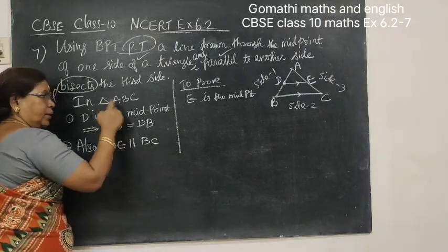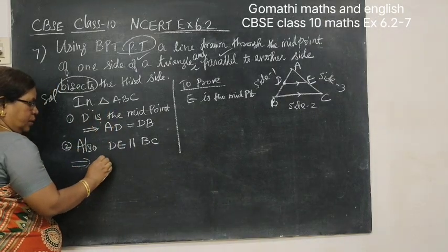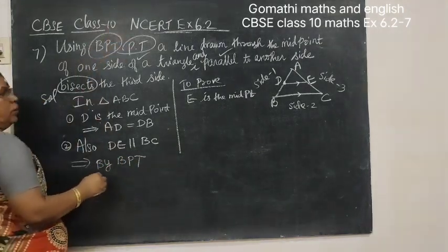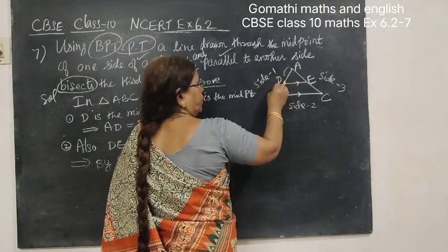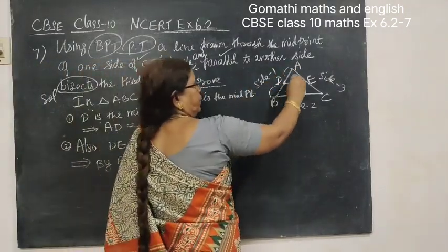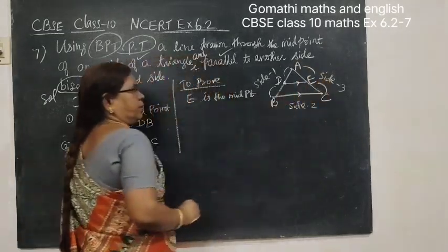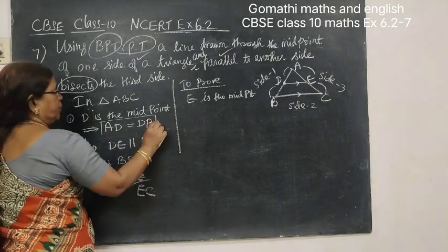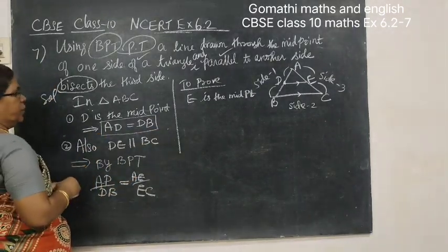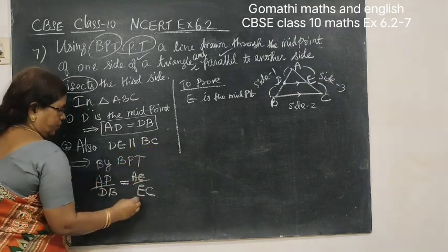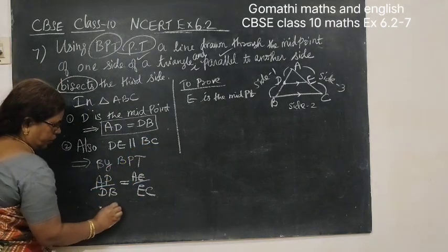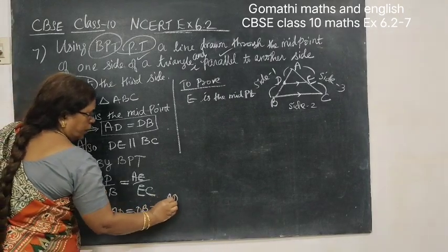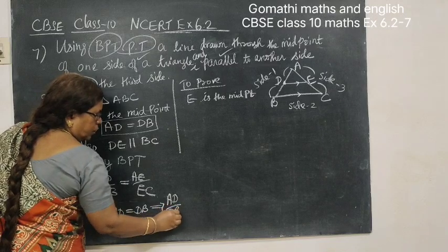To prove: DE is parallel to BC in triangle ABC. By BPT, AD by DB equals AE by EC. Since AD equals DB, it implies AD by DB equals 1.